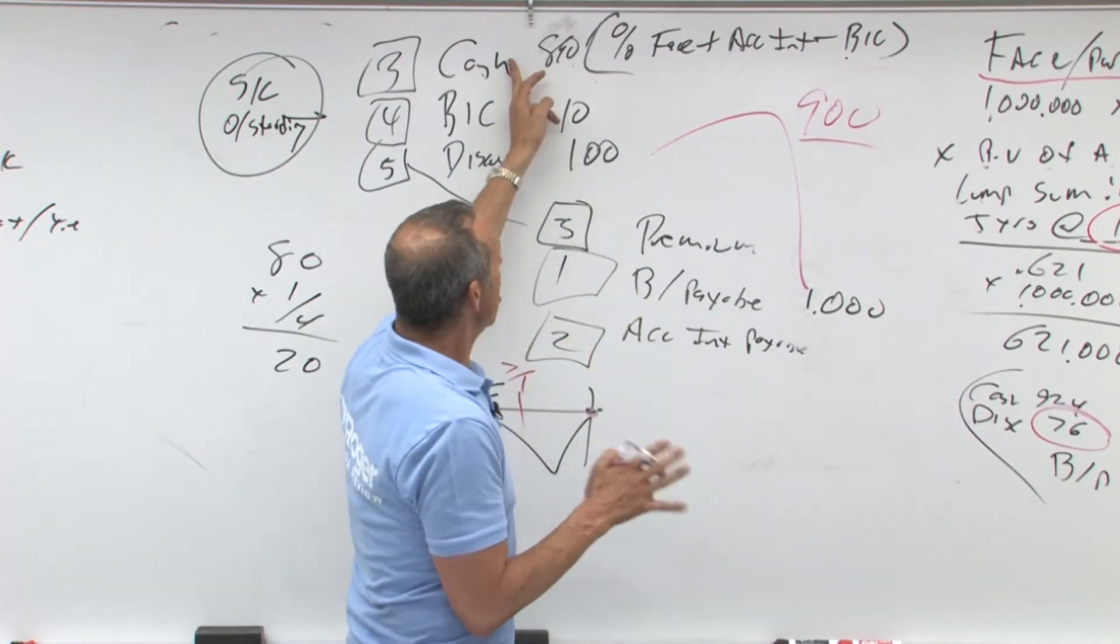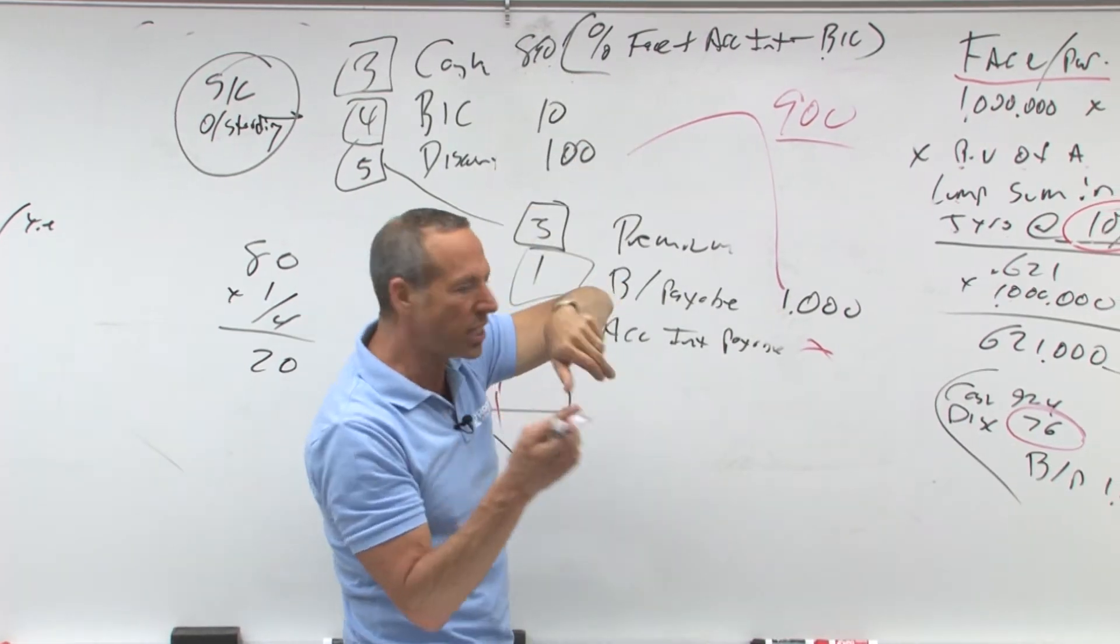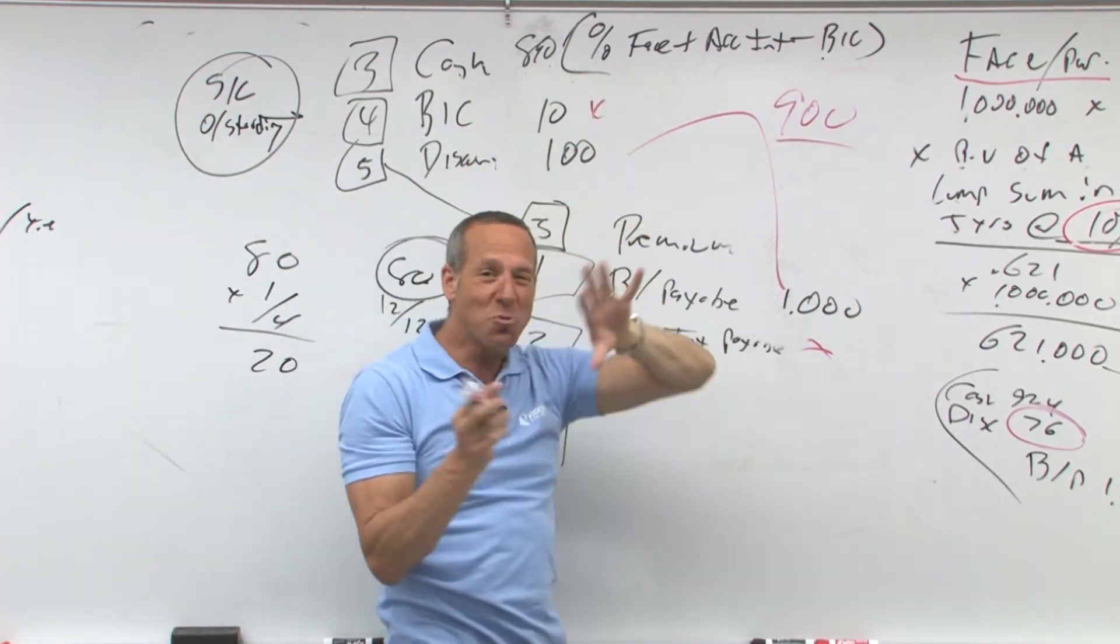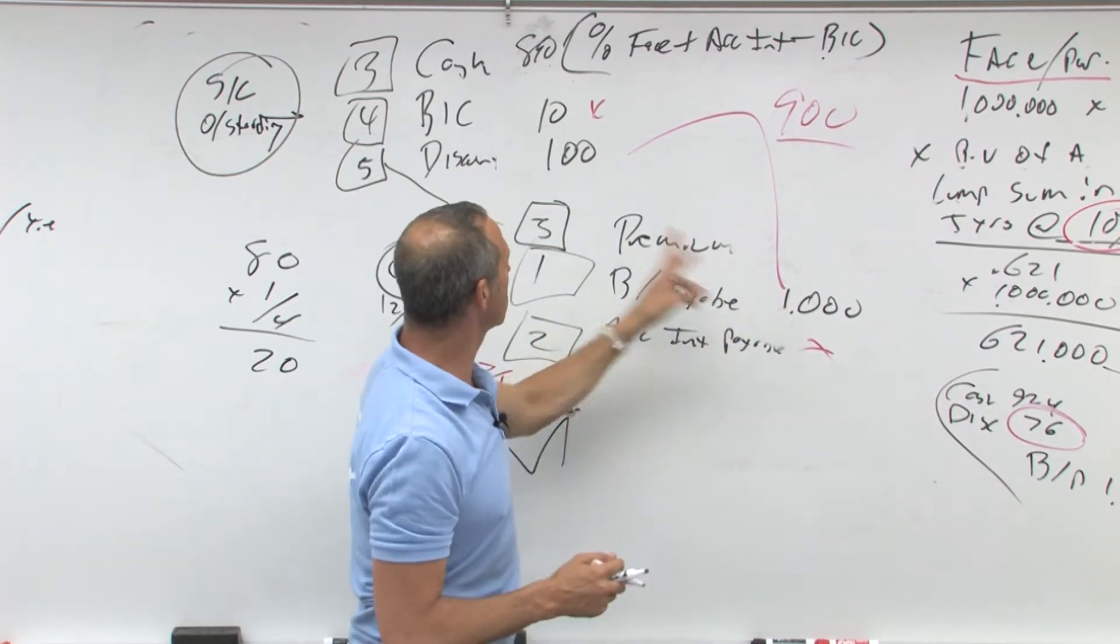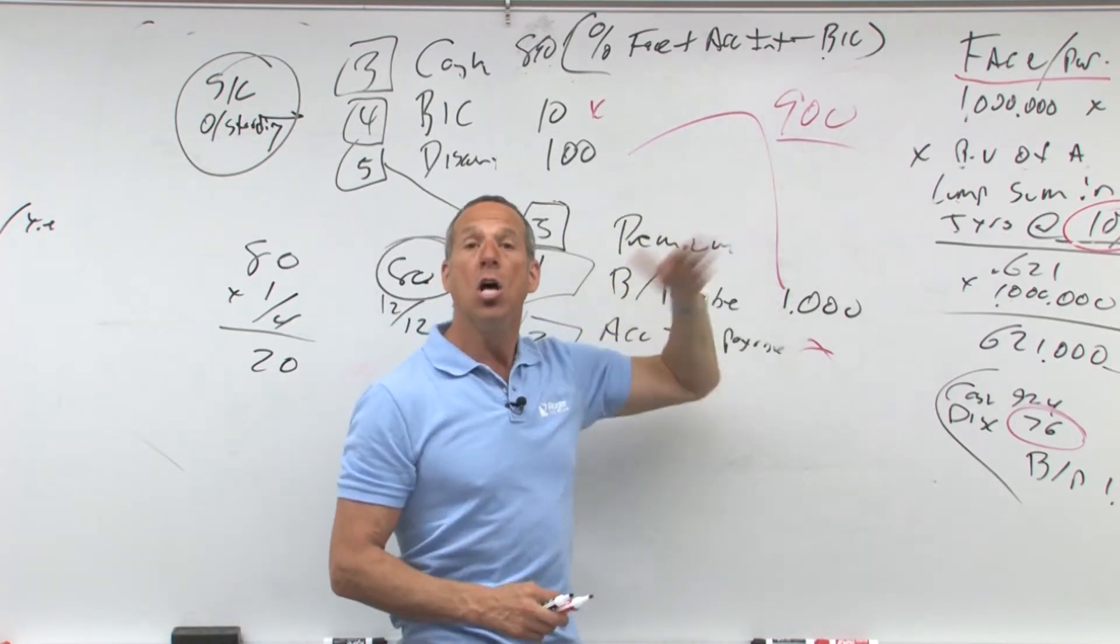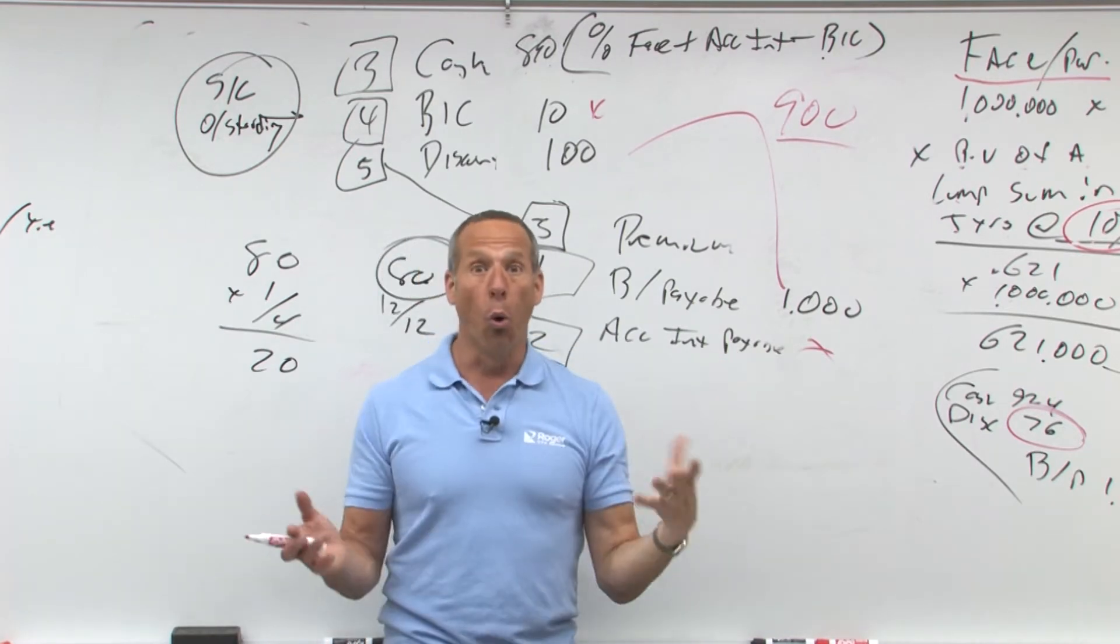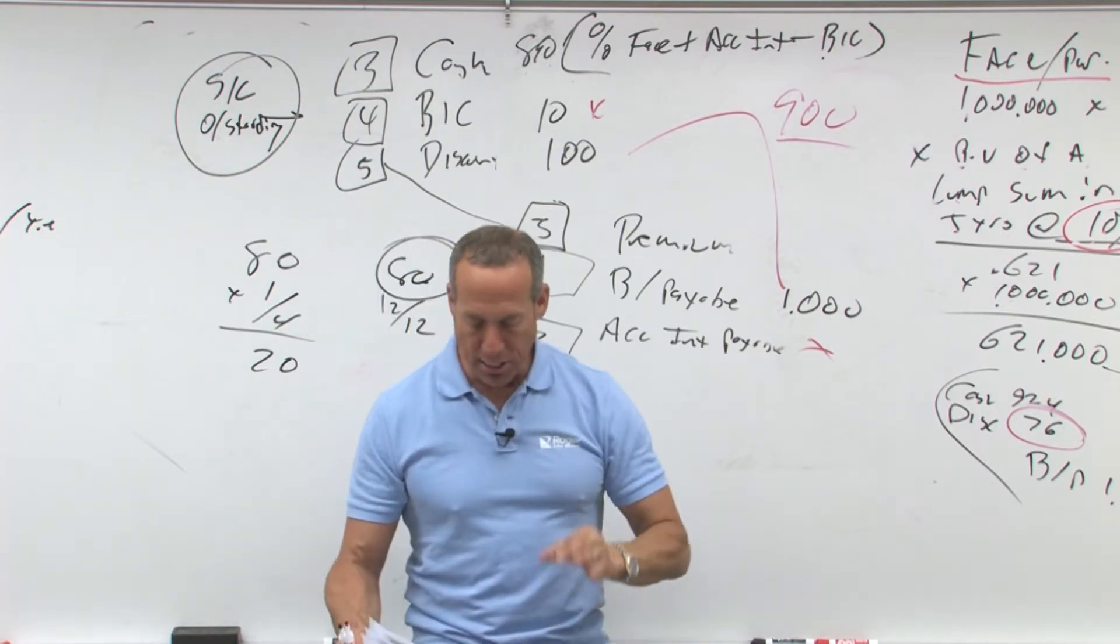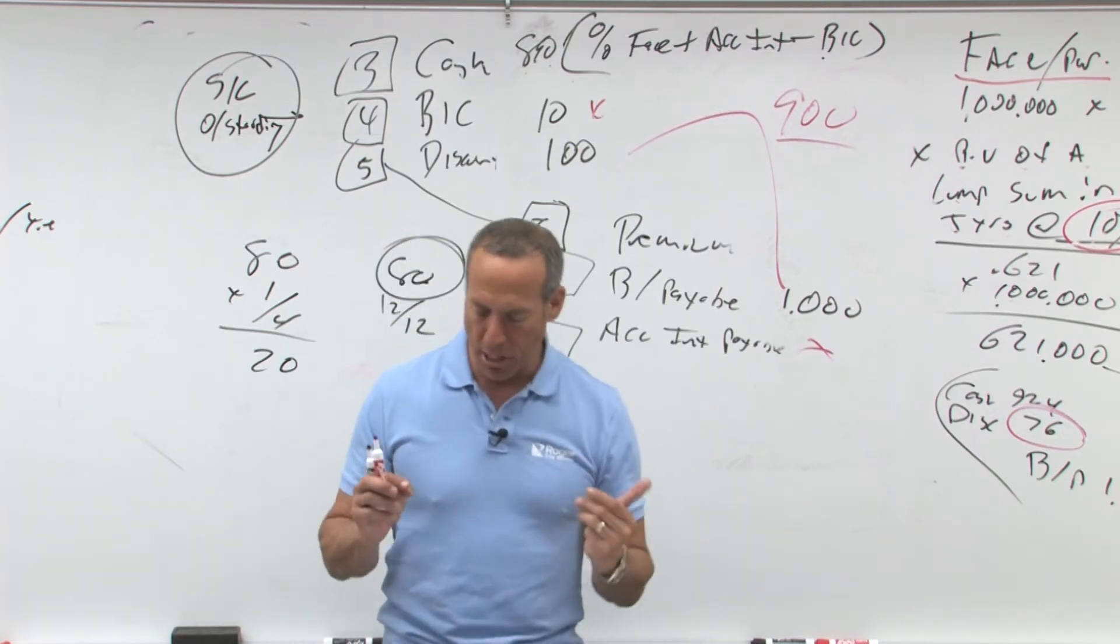But what I want you to realize is the cash doesn't always equal the carrying value. So if I got a certain amount of cash, don't forget we're adjusting it because you might have accrued interest which isn't frequently tested. You might have BIC which may not be frequently tested as well, because a lot of times what they want to test you on is, do you understand how to amortize out? So when we've been talking about fair value versus amortized cost, what the heck is amortized cost? This is now our chance to finally jump in and learn what the heck amortized cost is.